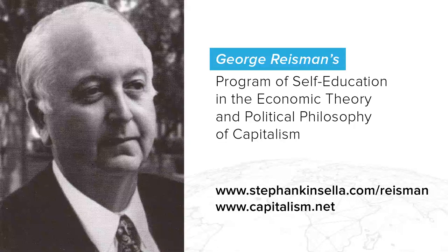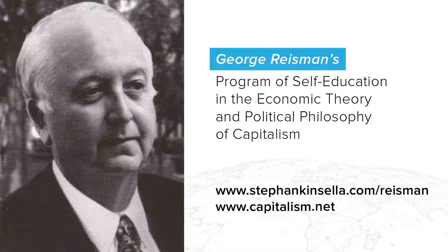The movement of capital and labor out of farming would take place until the rate of profit in farming was raised back up to the general level, and that of the various goods in additional demand by the taxpayers was brought down to the general level. Because until this result was achieved, incentives would exist for a further movement of capital and labor out of farming and into these other fields. When the process was finally completed, the rate of profit earned in farming would be on a par with the rate of profit earned everywhere else. In accordance with the uniformity of profit principle, it would simply not be possible for the rate of profit in farming to be permanently depressed.